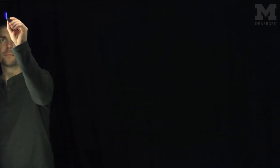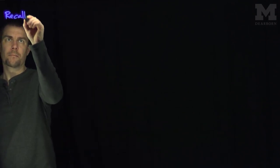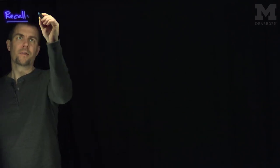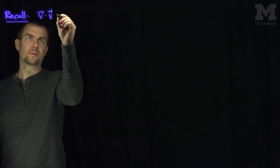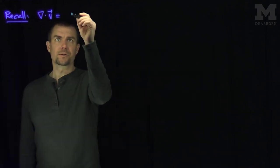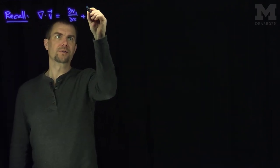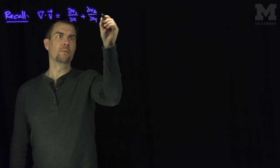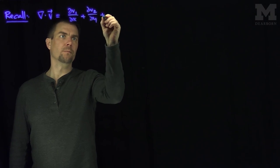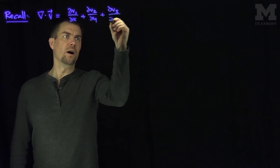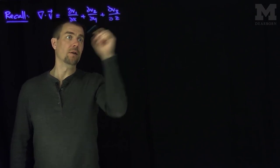Divergence and curl. Hello students. In this video we'll discuss several important vector identities involving divergence and curl. Let's recall that the divergence of a vector field is going to be the x derivative of v1, plus the y derivative of v2, plus the z derivative of v3.